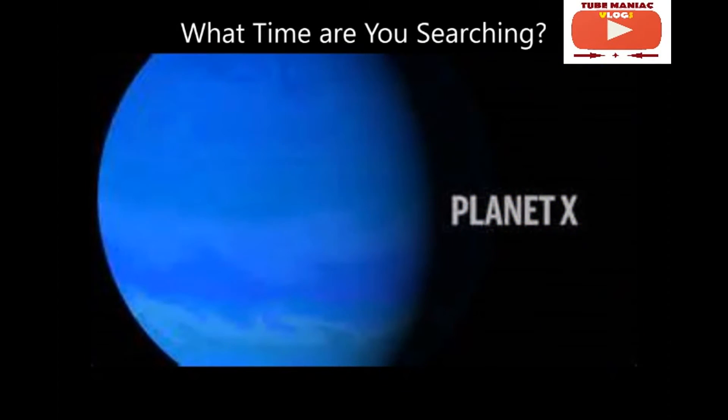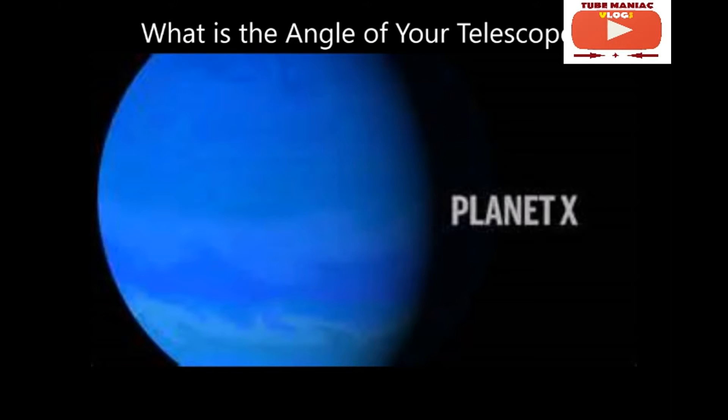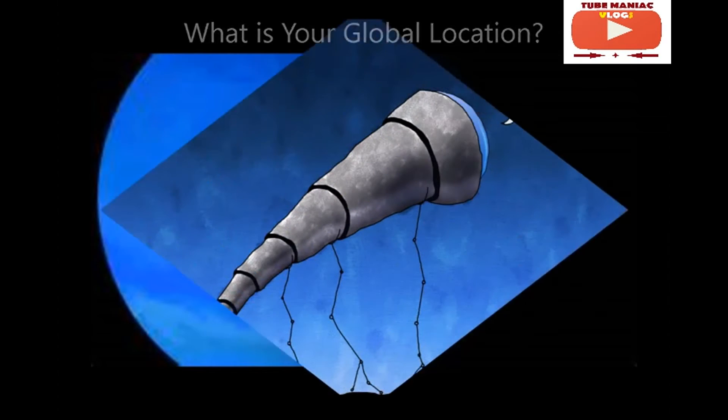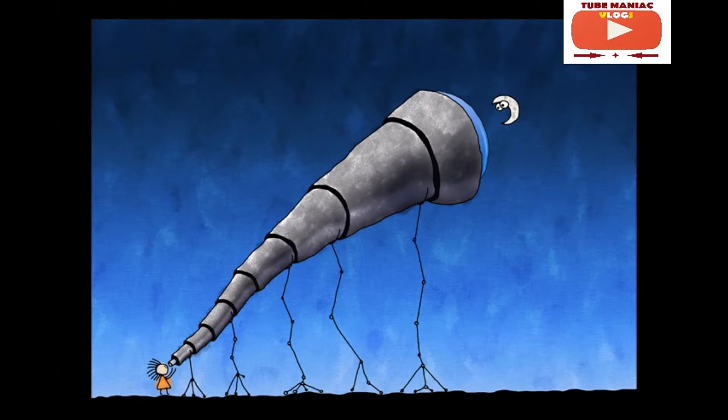Consider these three things. What time of day are you looking for this object? At what angle are you positioning your telescope? And in what part of the world are you located? A telescope only works if you know exactly the mark that you want to view. You can't just see it from anywhere.